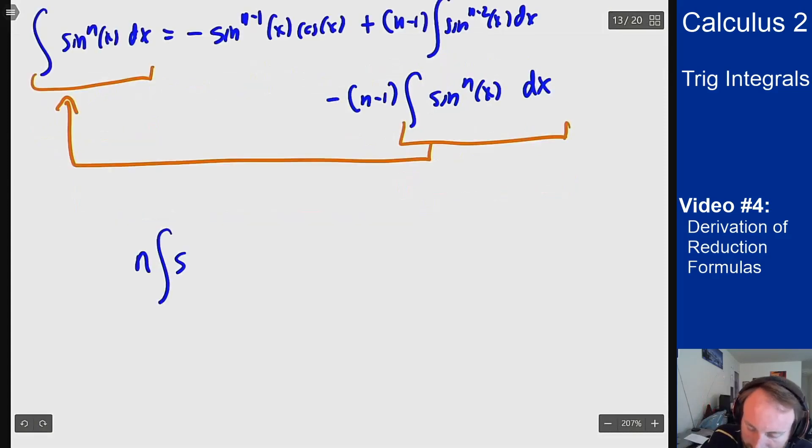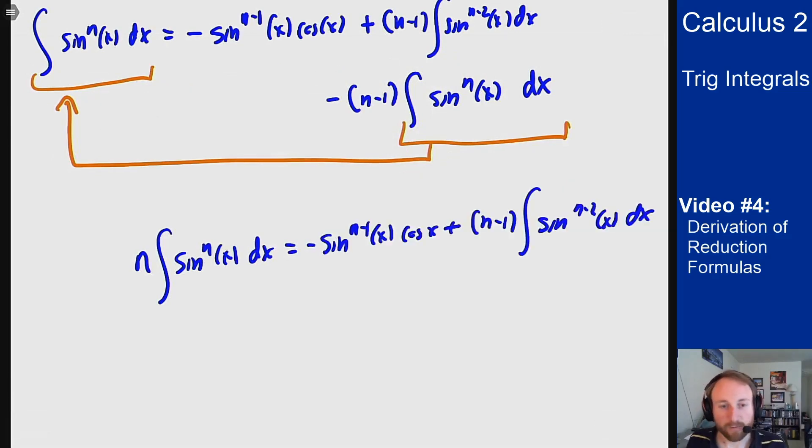So n integral of sine to the n of x dx equals the same thing over here. And then dividing through by n gives me the exact reduction formula that we had in the last section to solve those problems.